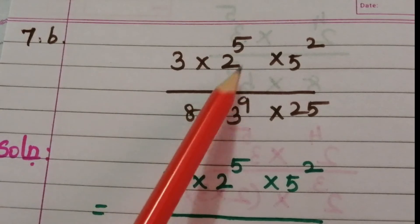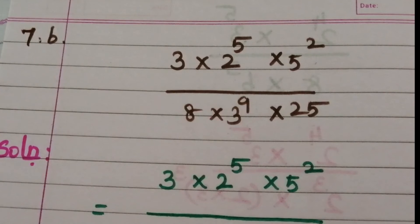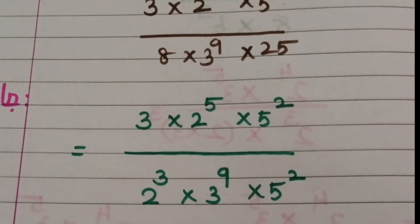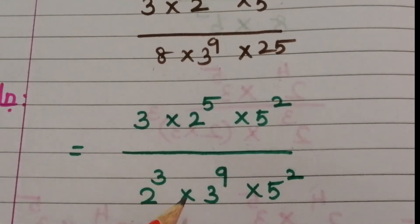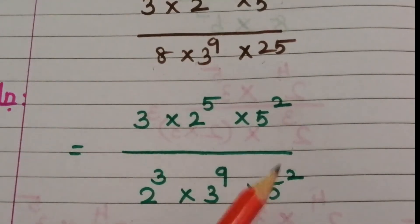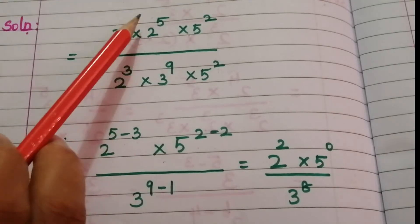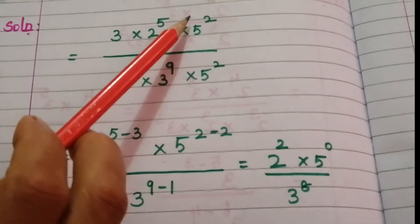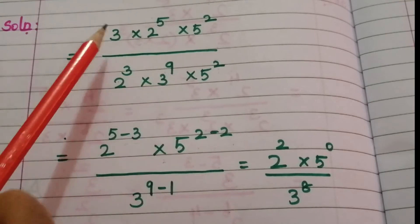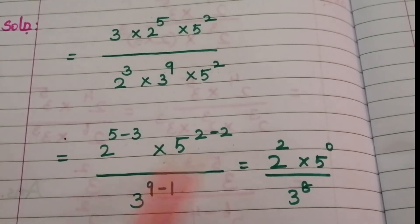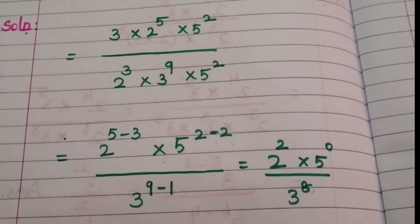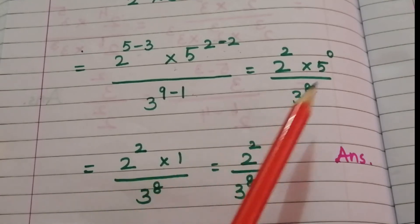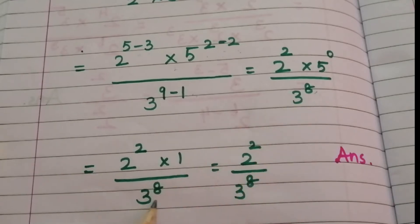Problem B: 3 into 2 power 5 into 5 square divided by 8 into 3 power 9 into 25. We write 8 as 2 power 3 and 25 as 5 square. Applying the laws: 2 power 5 minus 3 gives 2 square, 5 power 2 minus 2 gives 5 power 0 which is 1, and 3 power 9 minus 1 gives 3 power 8. So the answer is 2 square divided by 3 power 8.